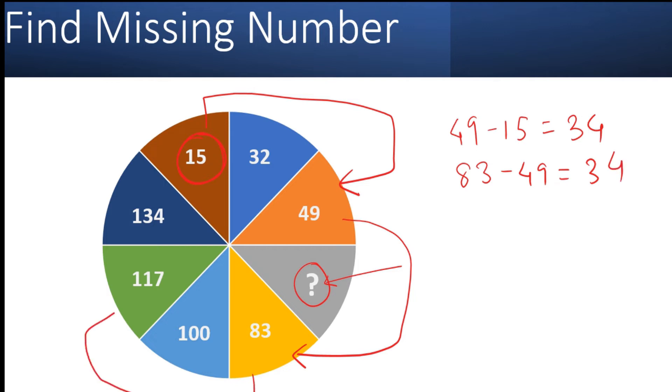Now let's jump again one step and again you see that 83 minus 49 is 34. Similarly, if you jump again one alternate step, you get 117 minus 83, which is 34.